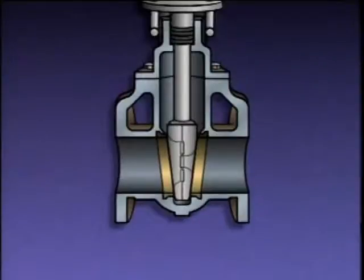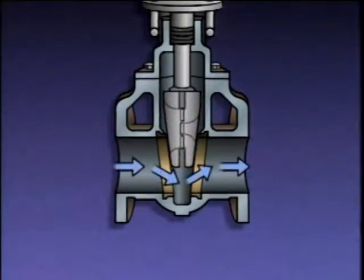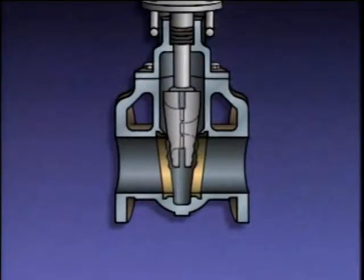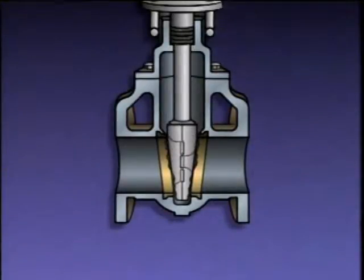Gate valves are normally used in on-off applications, but in an emergency they can be used to throttle flow. However, long-term use as a throttling valve can damage a gate valve. When the disc is raised slightly, fluid flow creates turbulence, which causes the disc to swing from side to side, banging or chattering against the seat. This chattering causes wear on the seat and disc, and eventually the valve will not shut off flow when completely closed.